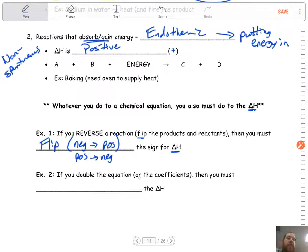If I double the equation or the coefficients, then you must do what to the delta H? Well, if I'm doubling all my coefficients, that means I'm using twice as much stuff, which means it would take twice as much heat, and my delta H would double as well. So that's kind of what we're doing with it.